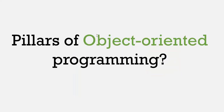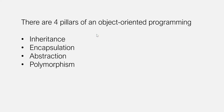What are the pillars of object-oriented programming? There are four pillars of object-oriented programming: inheritance, encapsulation, abstraction, and polymorphism. Let's understand each of them one by one.